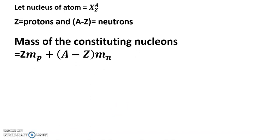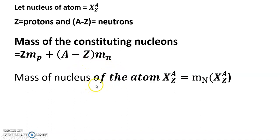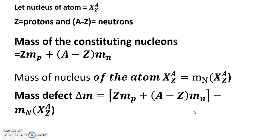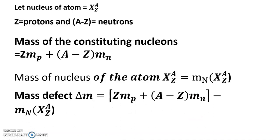Mass of the constituting nucleons Z m_p plus A minus Z m_n. Mass of nucleus of the atom X_Z^A is m_N of X_Z^A.